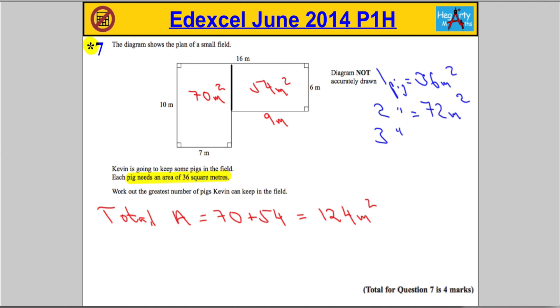How about 3 pigs? I'm going to add another 36 on, giving 108 metres squared. What about 4 pigs? I'm going to add another 36. Let's see, 6 and 8 is 14, carry the 1—it's going to be 144 metres squared.